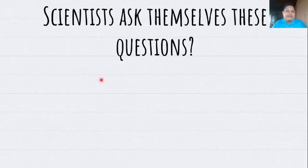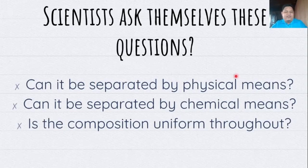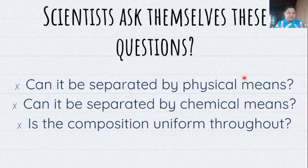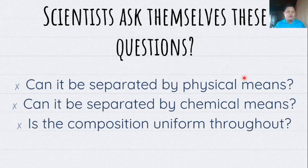What do the scientists ask themselves in order to classify matter? These are the questions they ask. First, can it be separated by physical means? Meaning, can this particular material be separated physically — by tearing them apart, separating them manually, or segregating them physically? Or can it be separated by chemical means? Are we going to apply chemical processes in order for them to be separated? Or is the composition uniform throughout? Those are the three questions they ask when they wish to classify forms of matter according to their properties.